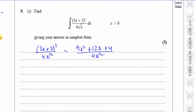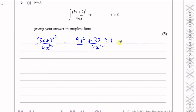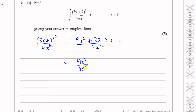Now what I'm going to do is write these as three separate terms. I need to put them as separate terms in order to integrate them. So this is 9x squared over 4x to the power of a half, plus 12x over 4x to the power of a half, plus 4 over 4x to the power of a half. Now I need to simplify.